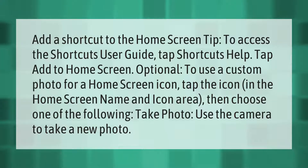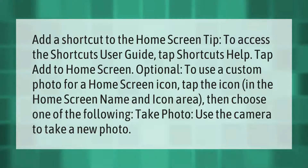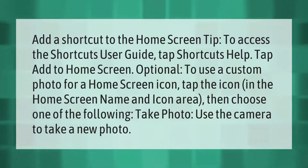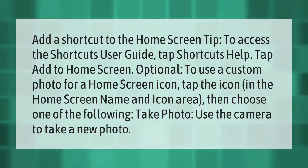To access the Shortcuts user guide, tap Shortcuts Help, then tap Add to Home Screen. Optionally, to use a custom photo for a home screen icon, tap the icon in the Home Screen Name and Icon area, then choose one of the following: Take Photo — use the camera to take a new photo.